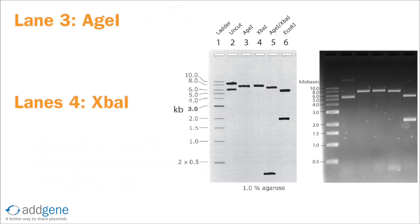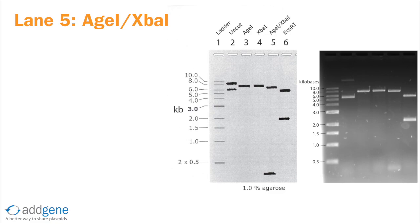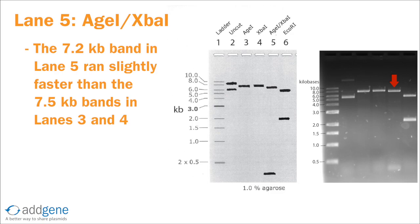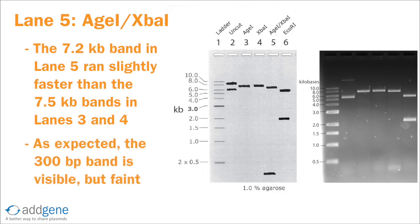Lanes 3 and 4 are the AGE1 and EXPA1 single digests, where we expect a single 7.5 kb band and possibly some uncut fragments. In each lane, we do see a linear 7.5 kb band. Lane 5 is the AGE1/EXPA1 double digest, where we expect two digestion products. We can identify the 7.2 kb band clearly — since this is a new band, we know it must be the 7.2 kb digestion product. Looking for the 300 base pair band, we find that it's visible but faint. From our earlier calculations, we expect this band to be 24 times less intense than the 7.2 kb band, so the band intensity is not surprising.